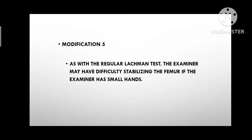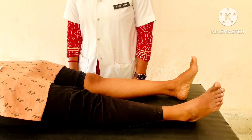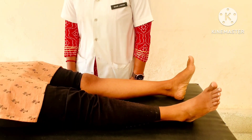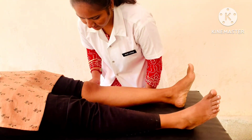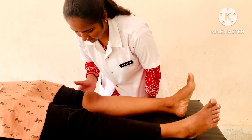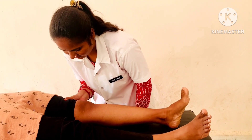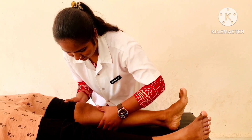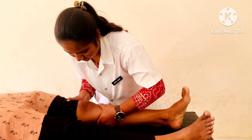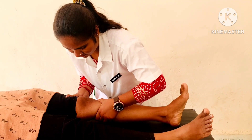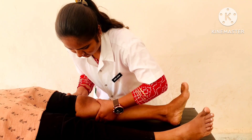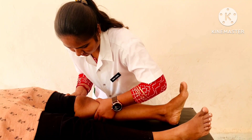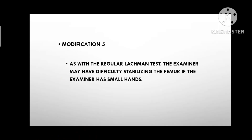Modification 5: Patient Position: supine lying. Therapist Position: standing beside the leg to be tested with eyes level with the knee. The examiner grasps the femur with one hand and the tibia with the other hand. The tibia is pulled forward and any abnormal motion is noted. As with the regular Lachman test, the examiner may have difficulty stabilizing the femur if the examiner's hands are small.